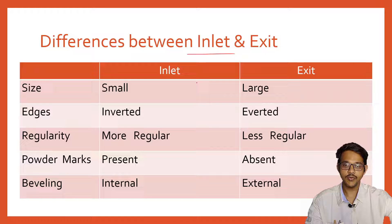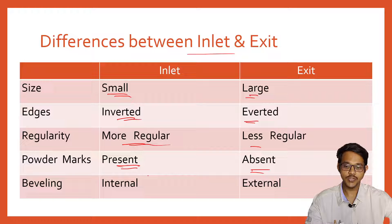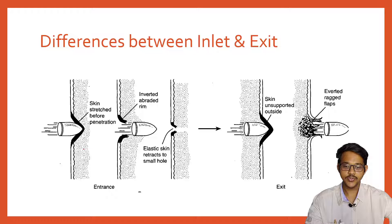Differences between inlet (entrance) and exit wounds: inlet wounds are usually smaller; exit wounds are larger. Edges are inverted in entrance wounds and everted in exit wounds. Entrance wounds are more regular; exit wounds are less regular. Powder marks are present at the inlet but absent at the exit. Beveling in the skull is seen internally at the entry and externally at the exit. When the bullet enters, it stretches the skin and inverts it, reducing in apparent size due to skin elasticity. Supported exit wounds have the same diameter as entrance wounds.